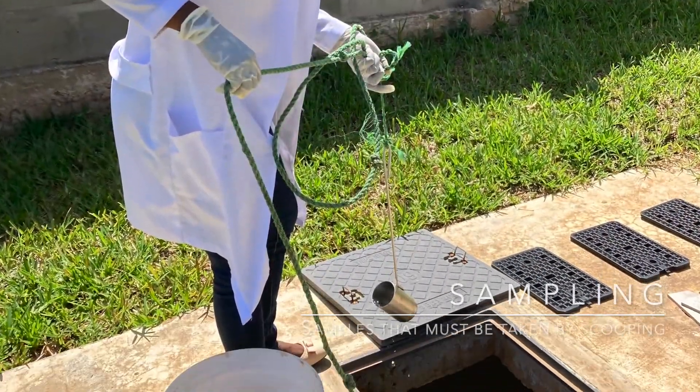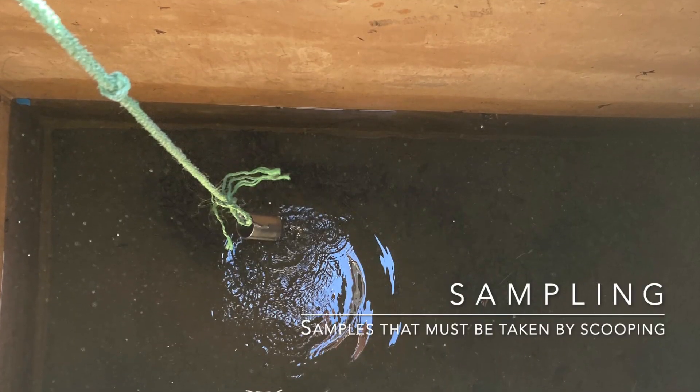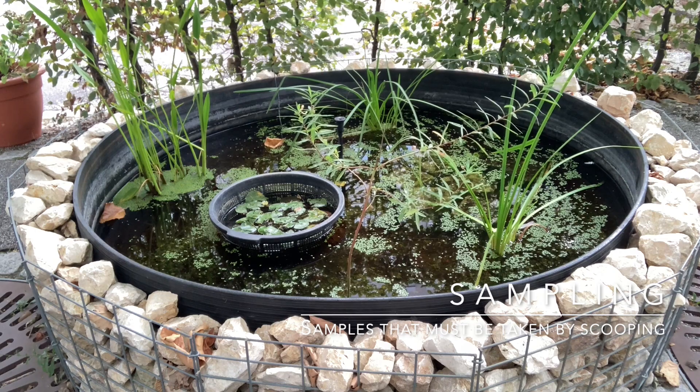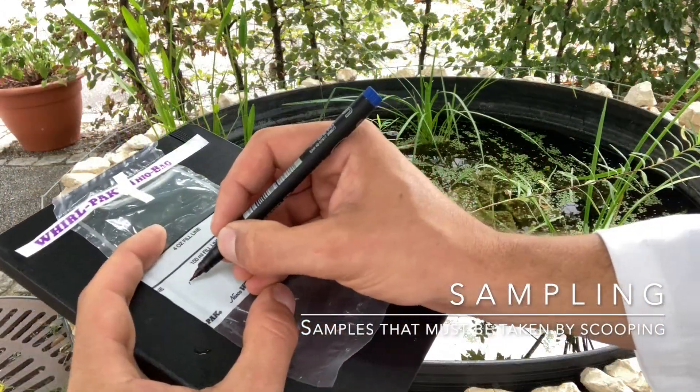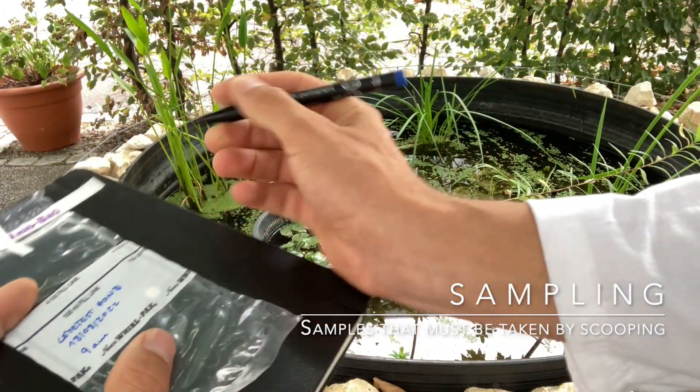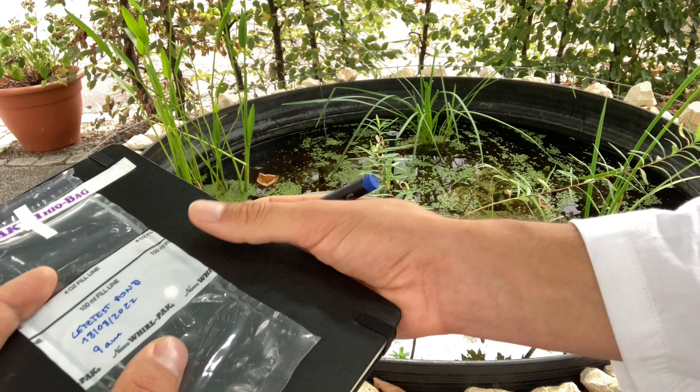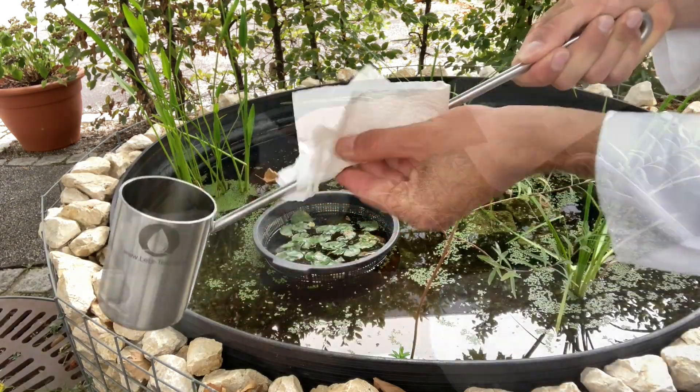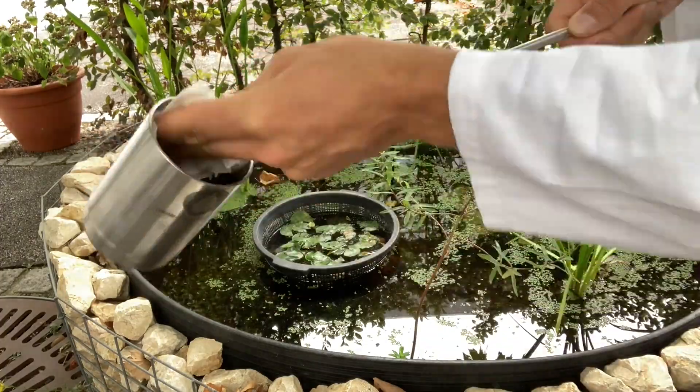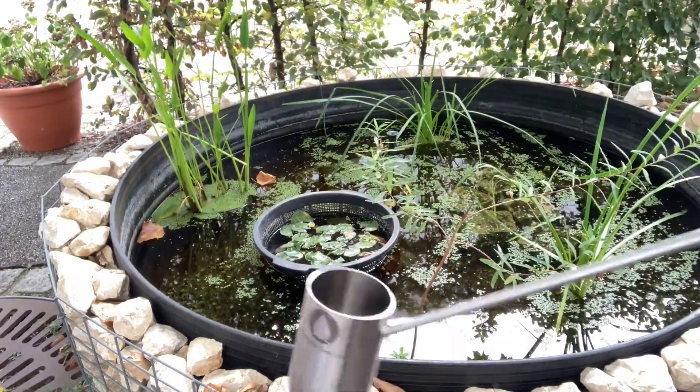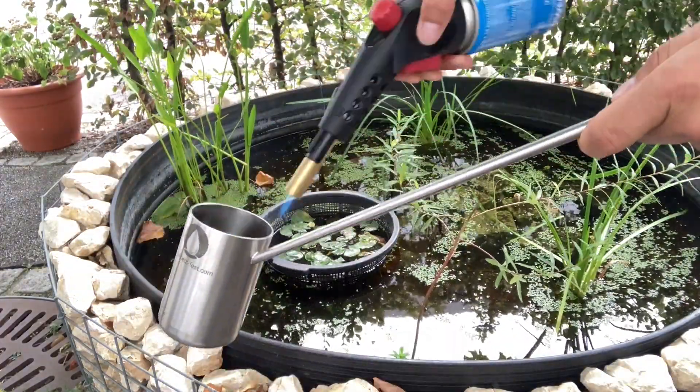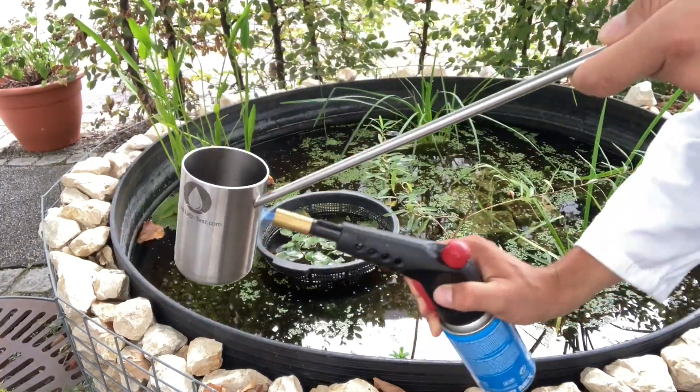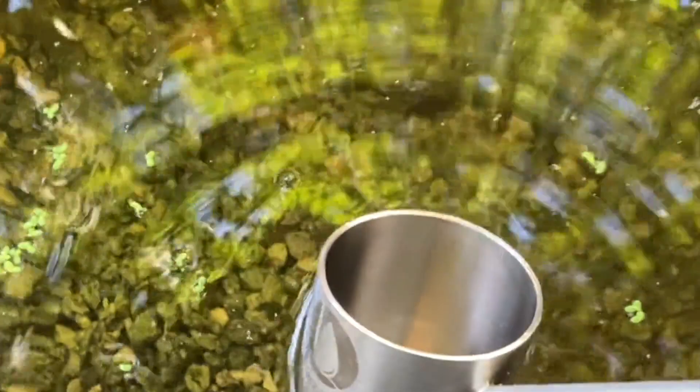When sampling at locations where the sample must be scooped, proceed as follows: Label the sample bag with ID, date, and time using a waterproof pen. Then wipe the critical part of the liquid sampler with alcohol. If possible, sterilize it with a Bunsen burner or wait three minutes for the alcohol to react and evaporate.